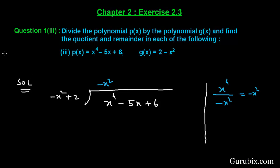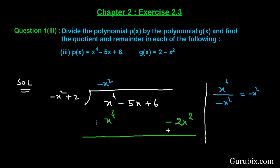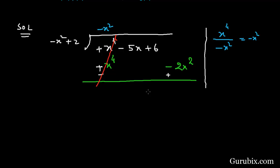Now we multiply all the terms of the divisor by minus x squared, giving us positive x⁴ minus 2x squared. We then change the sign of these terms, and we observe that these terms cancel out. Therefore, here we have positive 2x squared minus 5x plus 6, having brought down minus 5x and plus 6.